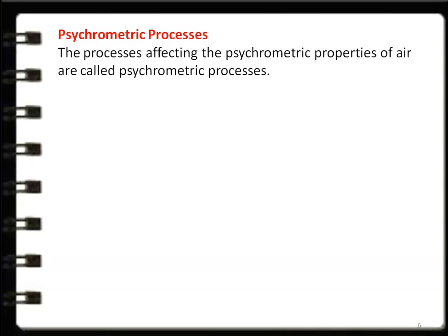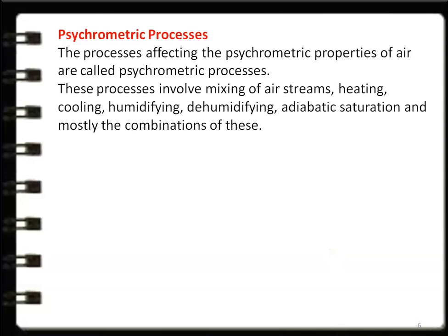What is a psychrometric process? The processes affecting the psychrometric properties of air are called psychrometric processes. The psychrometric properties include specific humidity, dry bulb temperature, wet bulb temperature, humidity, and degree of saturation. When these properties are affected or changed by a process, it is called a psychrometric process. The processes involve mixing of air streams, heating, cooling, humidifying, dehumidifying, adiabatic saturation, and mostly combinations of all these processes.